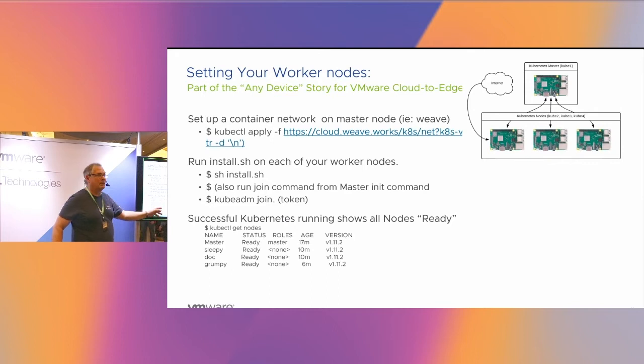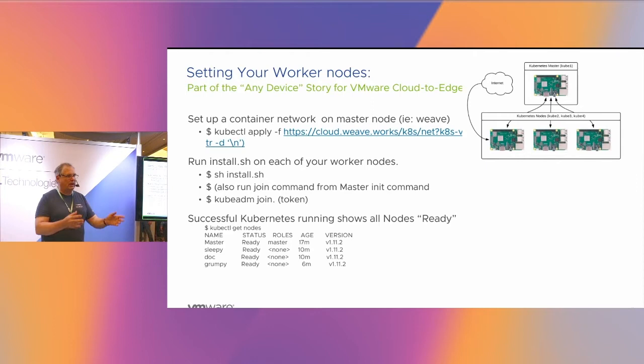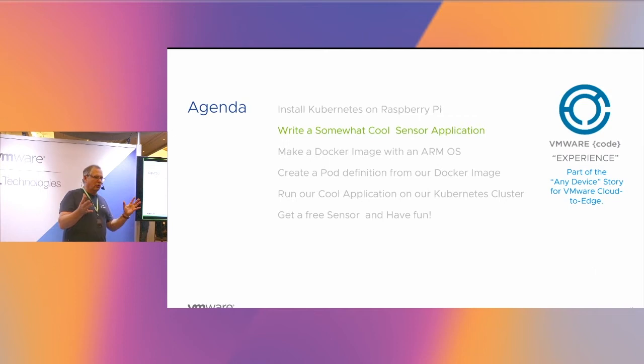Don't panic when it says initializing, then not ready, then flips to ready — it's doing some magic configuration. We have done the work to install Kubernetes on a master node plus worker nodes, and it's pretty reliable other than the timing to wait for the join and status to come up ready. These slides are published on code.vmware.com — you can Google 'Raspberry Pi VMware' and you'll get this deck.